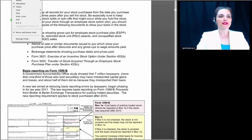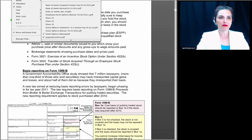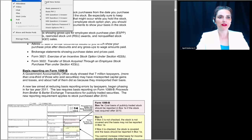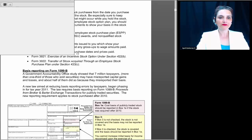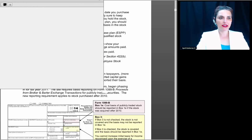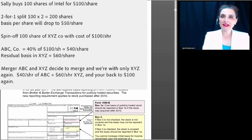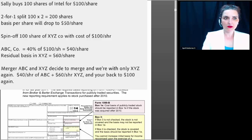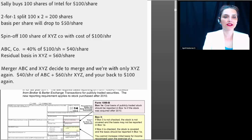I haven't really taken the time to do some illustrations about spin-offs, and I feel remiss if I don't do that. So let me make up an illustration of a split. Sally buys 100 shares of Intel at $100 a share, and then Intel has a two-for-one split. That means instead of having 100 shares, she now has 200 shares. But the total cost of her shares is the same — instead of having 100 shares at $100 each, she now has 200 shares at $50 each. So that's how a split works.